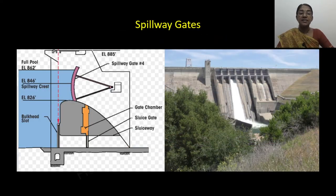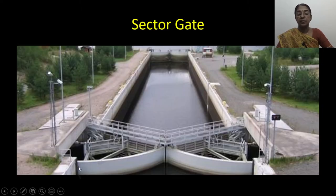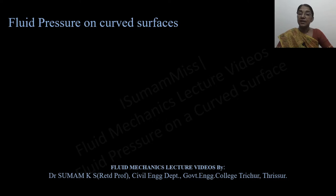In many engineering applications, it is necessary to know the magnitude, direction, and location of the resultant hydrostatic force exerted by a liquid in static condition on a submerged curved surface. For example, the pressure force acting on the curved surface of a ship or submarine at rest in water, or curved gates for sluices. In the rainy season, spillway gates — which are cylindrical in shape — are used for removal of excess water collected in a dam. Similarly, sector gates are used for flood control in locks and dams.